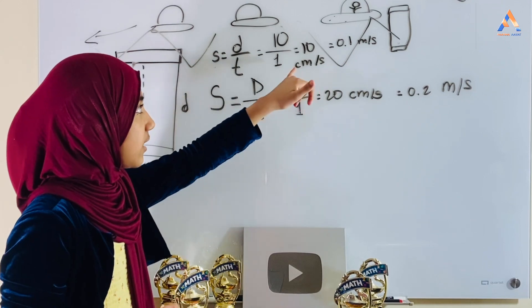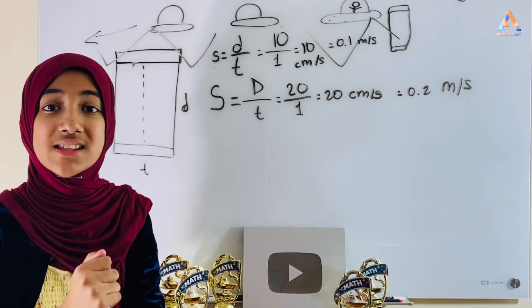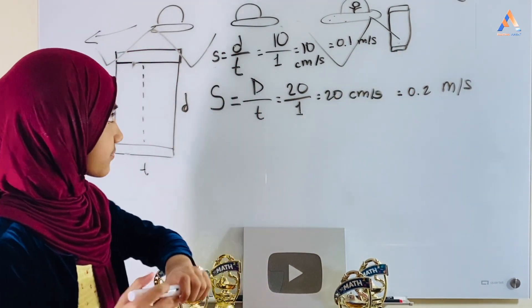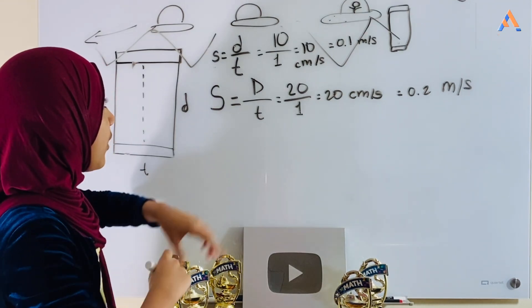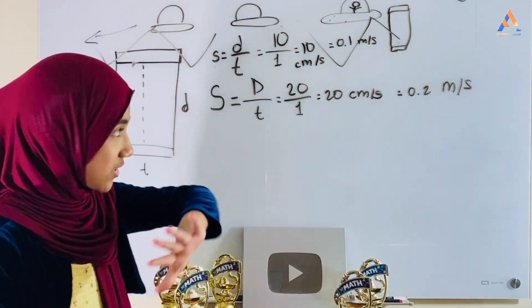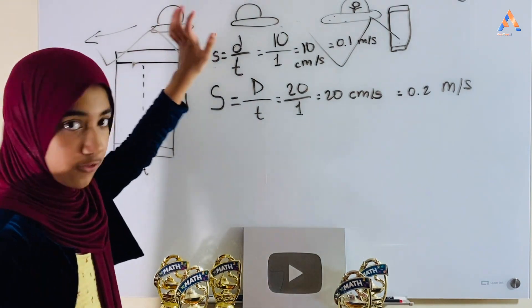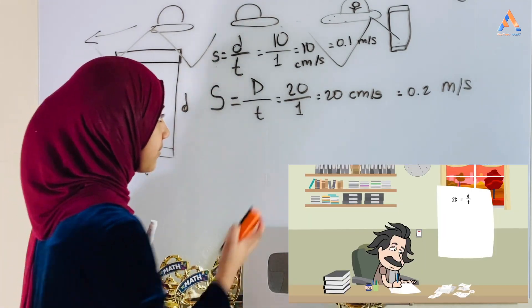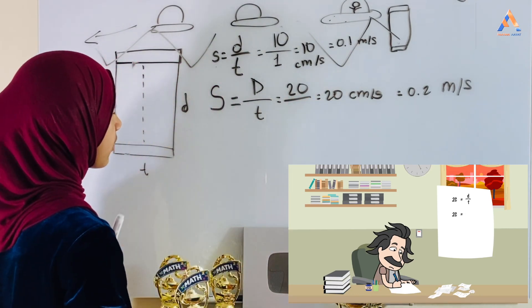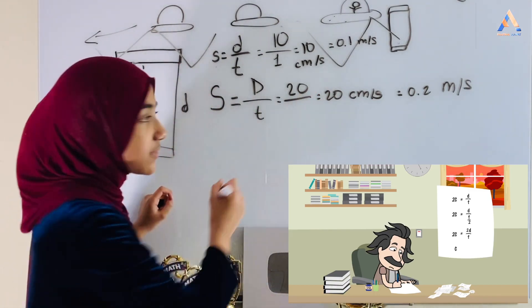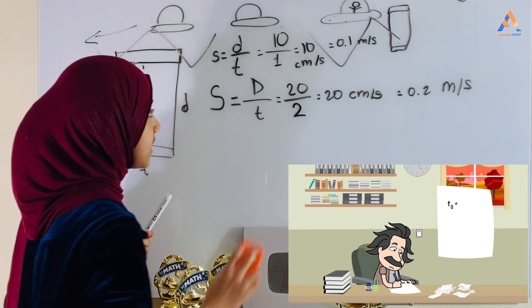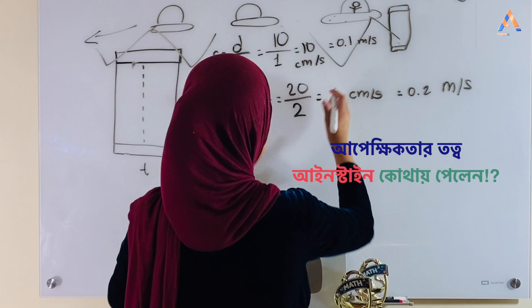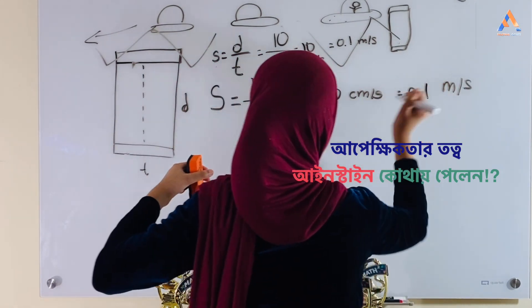Maxwell's law states that the velocity of any electromagnetic wave should always be constant, no matter where the observer's frame of reference is. So these two things totally clash. The distance will always be different because it travels diagonally, but the speed must be the same. So the only thing left to change is time — we need to slow down time. Instead of taking one second, it takes two seconds.